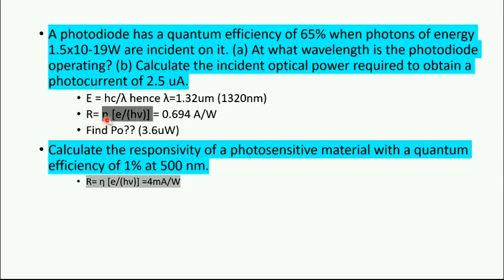R is equal to efficiency times electron charge divided by photon energy. Efficiency is 65%, charge of electron is 1.6×10⁻¹⁹ coulombs, and ν equals c by λ. Lambda we found already. Substituting these values you will get 0.694 amperes per watt as the responsivity. You must always write the unit, either in micrometers or nanometers.